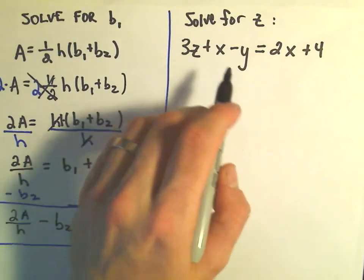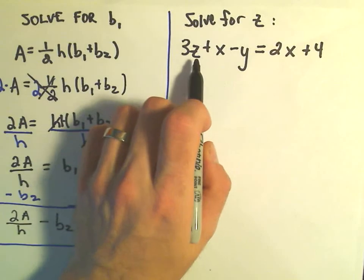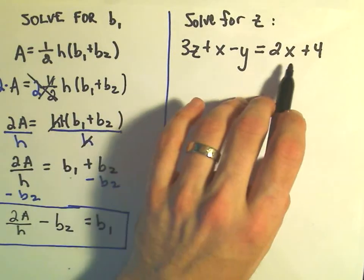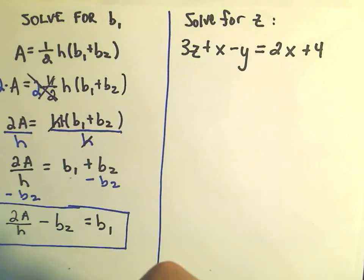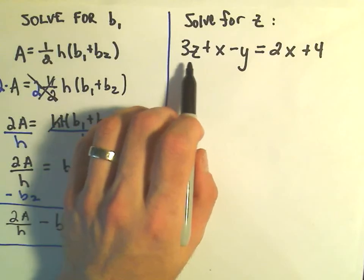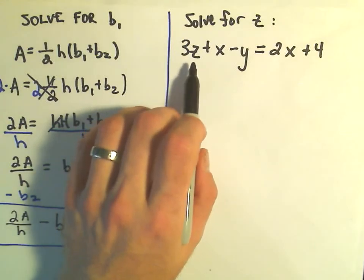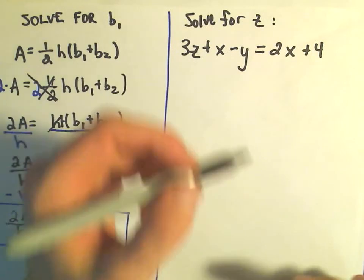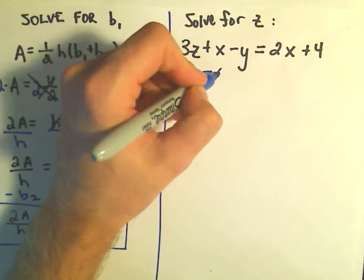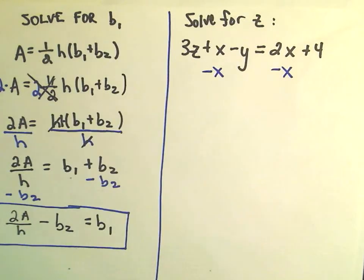In the second equation, we have to solve for our variable z. So we've got 3z plus x minus y equals 2x plus 4. And since there's only a single z floating around on the left side, I'm going to just leave that by itself. So I've really got to do two things. I've got to get rid of the plus x and the minus y. So I can subtract x from both sides to get rid of the x.